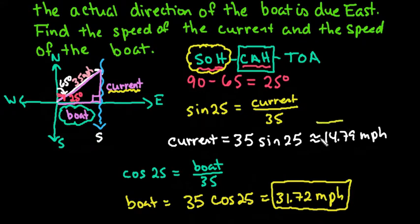So these would be the answers. We could say that the current is approximately 14.79 miles per hour, or 15 miles per hour to the south, and the boat is traveling 31.72 miles per hour directly to the east.